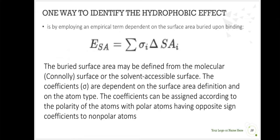One way to identify the hydrophobic effect is by employing an empirical term dependent on the surface area buried upon binding. So we are going to use this equation. And of course, we are talking about energy. We are going to use our equation in internal energy or enthalpy as well as the entropy. So this is our equation here. Internal energy as well as entropy and Helmholtz, that is E_SA, is equal to the summation of sigma_i times the change in entropy times the Helmholtz free energy.